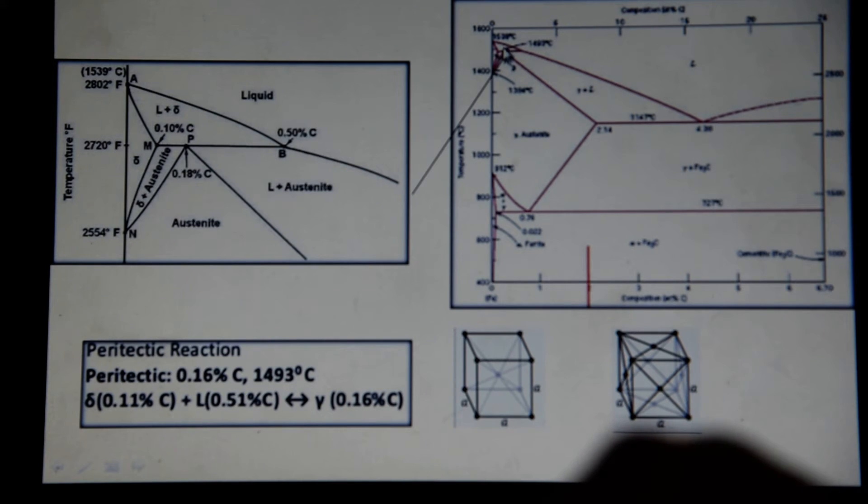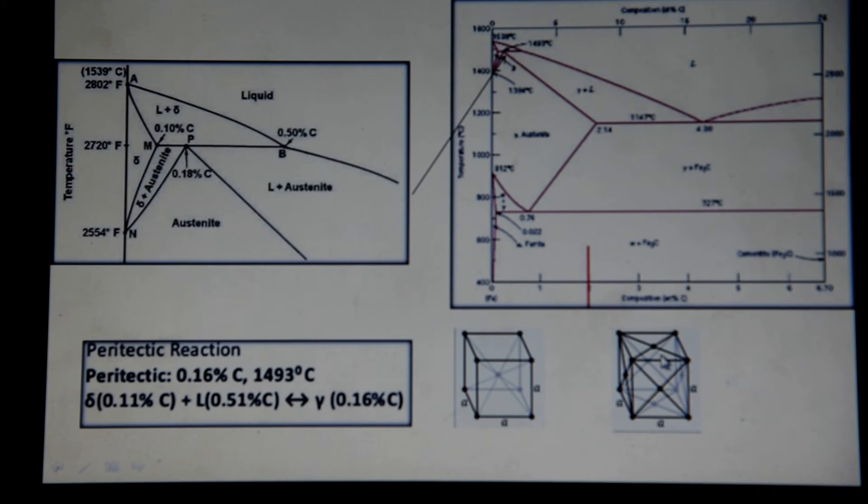The austenite or the gamma phase has a crystal structure like this, which is face centered cubic. Which means that if you imagine the crystal structure as a cube, you would have a lattice point in the middle of each face and lattice points at each edge, at each point or at each edge.